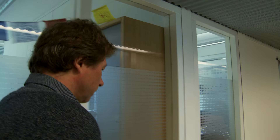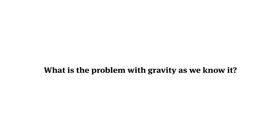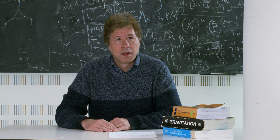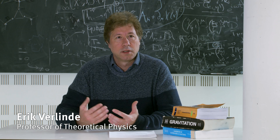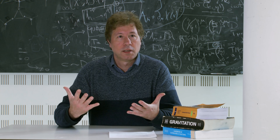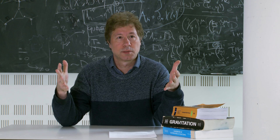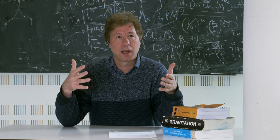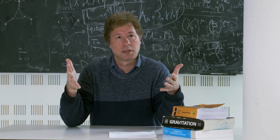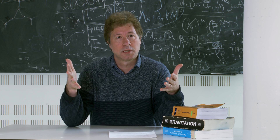My description of gravity is different from Einstein's theory or Newton's theory, because I try to explain where gravity comes from. The physical problem I want to solve is why does gravity in certain situations seem to behave differently than Einstein has told us. In particular, in galaxies we find that there is more gravity than we can explain based on the matter that we see. Normally we explain this by adding dark matter, but I can explain it by understanding better what gravity really is, and I found a solution without assuming any dark matter particles.